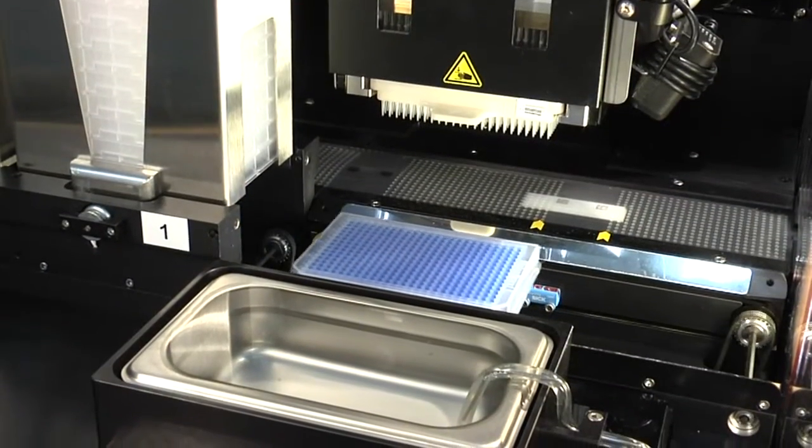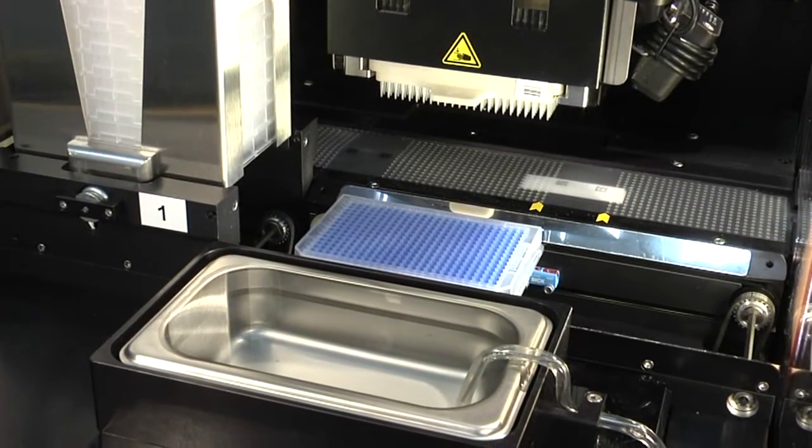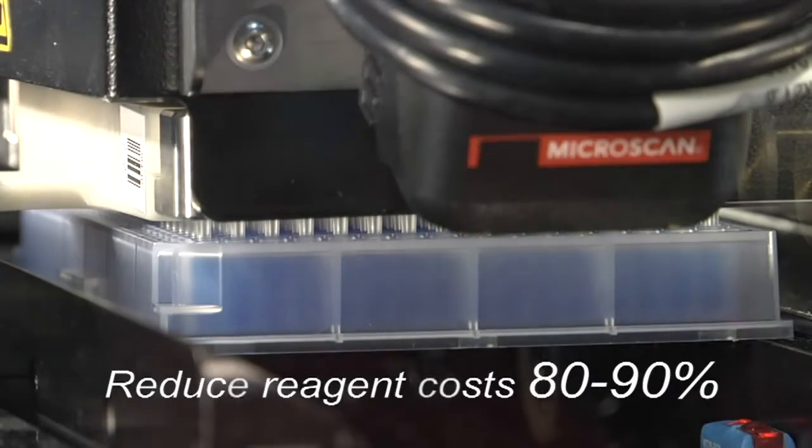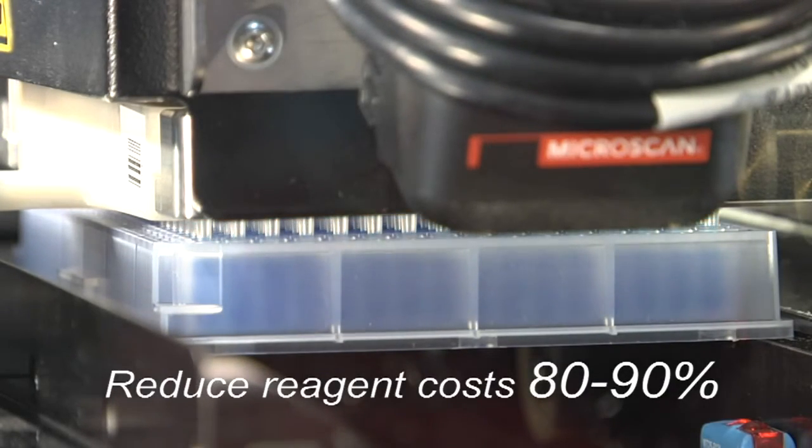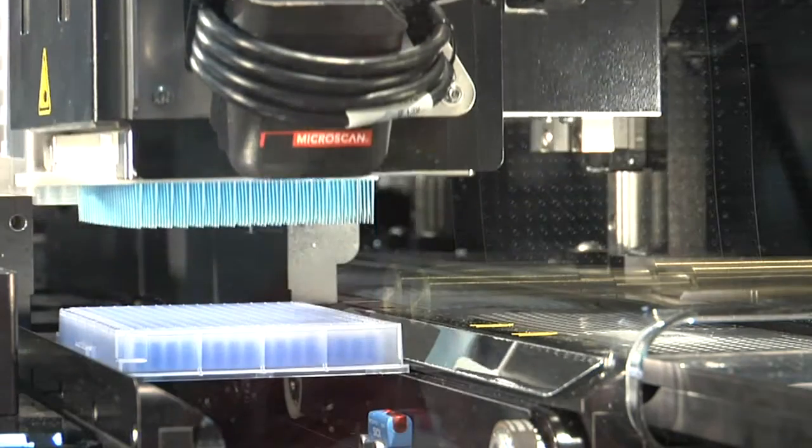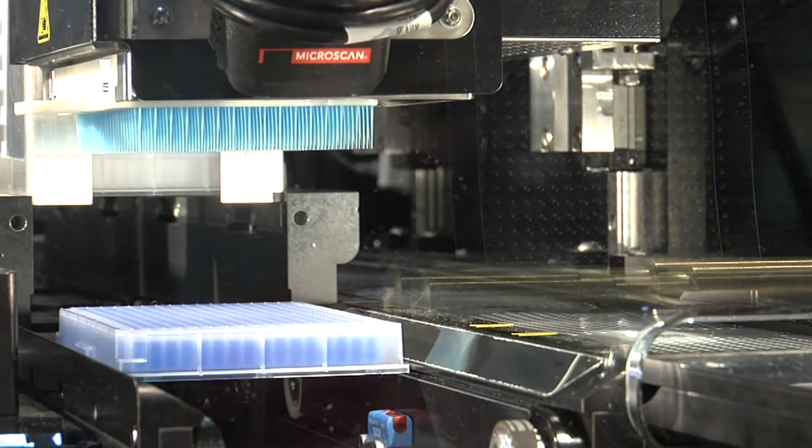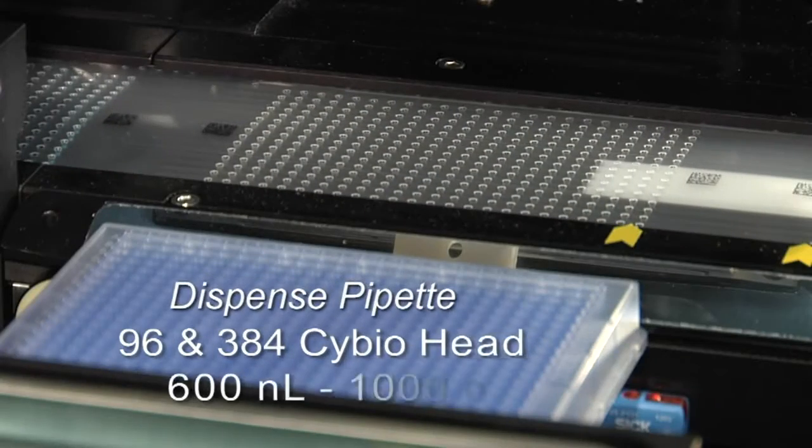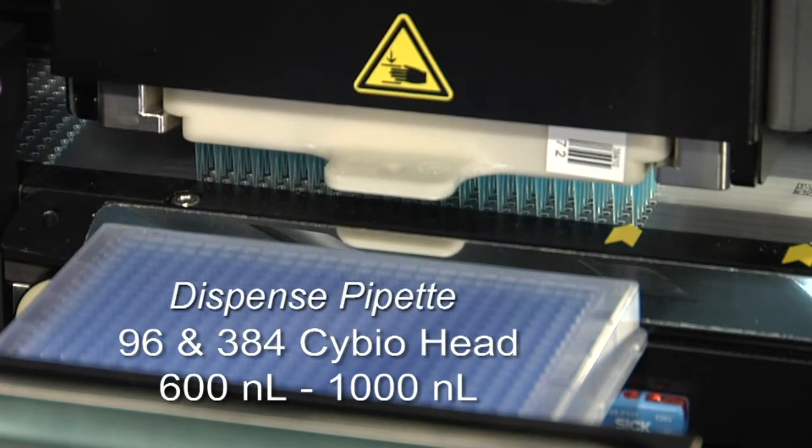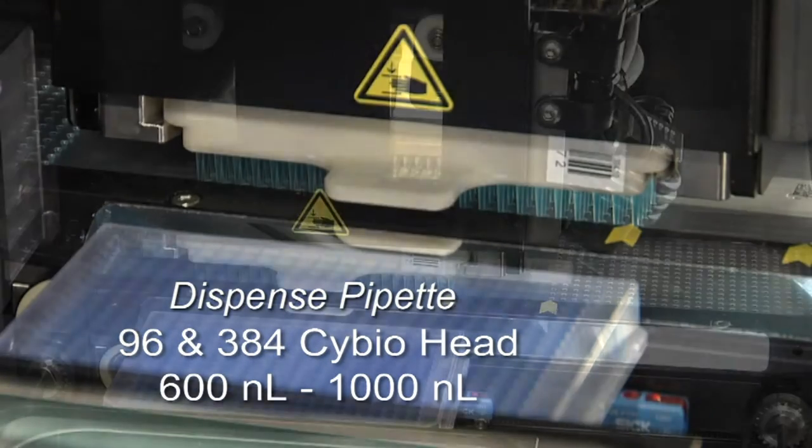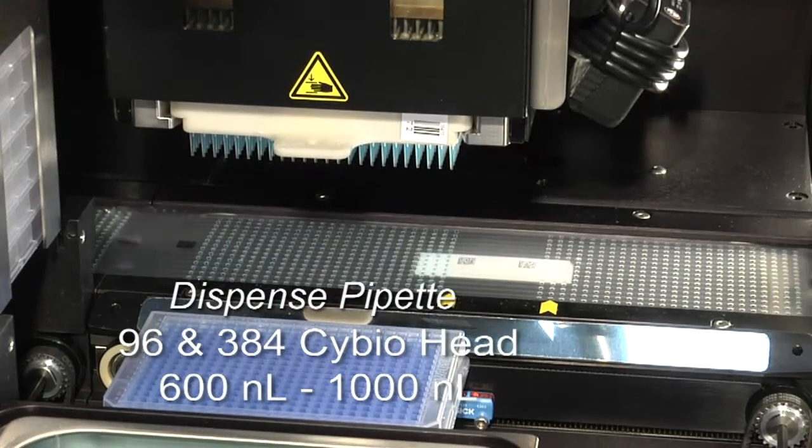The first step is to combine the reaction components in array tape. This step alone can reduce your reagent costs by 80-90% with miniaturized reaction volumes. Add the DNA sample in 384 wells at one time using CyBio contact dispense pipette. Volume ranges from 600 to 1000 nanoliters.